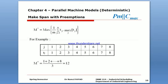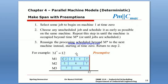...in this example, we're going to consider the processing we have. If we come to this one, we select the job to begin on machine one at time zero. Choose any unscheduled job to be scheduled as early as...